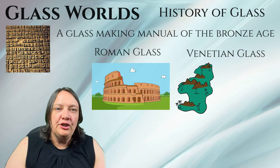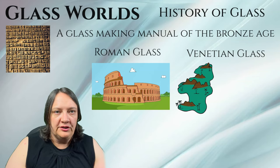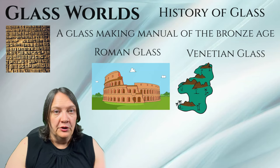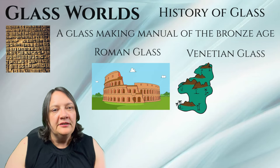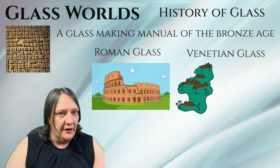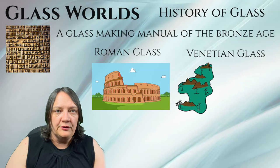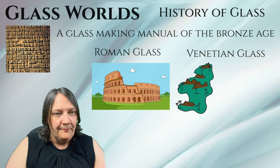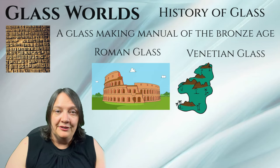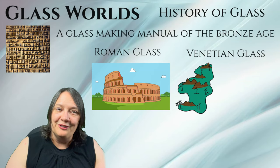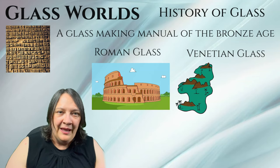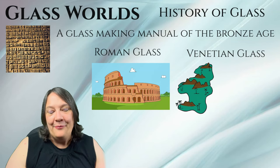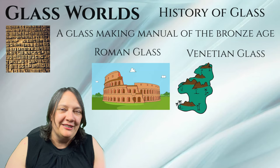In 1291, the Venetian government ordered all glassmakers to move their furnaces to the island of Murano in the Venetian Lagoon, just north of the city of Venice. This decision was made for two primary reasons: first, to mitigate the risk of fires in the densely populated city, as glassmaking involved working with high temperatures and open flames; and secondly, to allow the government to better control and protect the secrets of glassmaking, which was an important source of income and prestige for Venice.